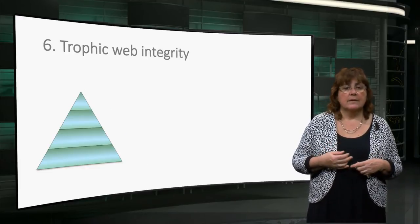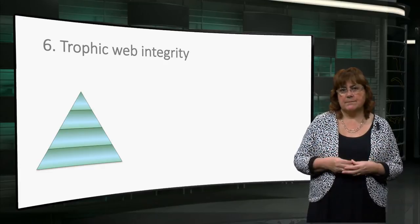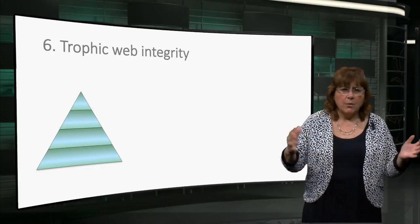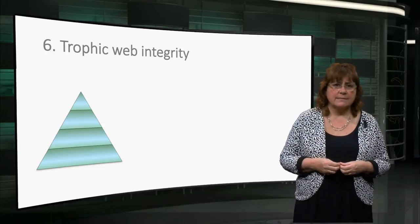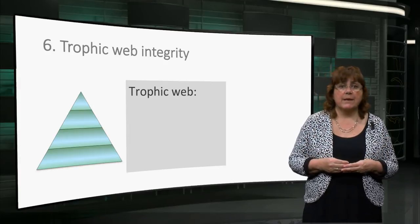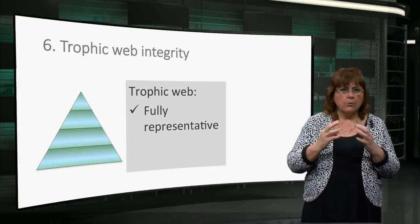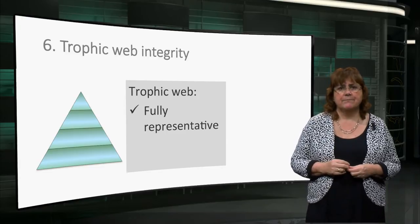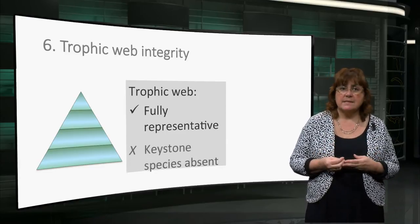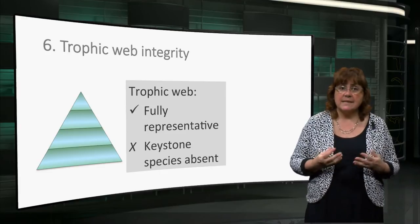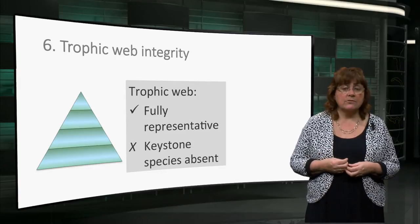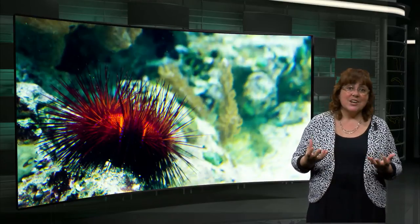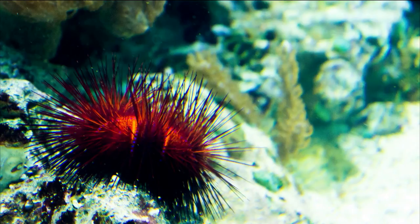Sixth, the principle of trophic web integrity. Ecosystems are complex networks in which matter, energy and living beings interact. A fully representative trophic web has all the levels and all the species interacting in a healthy way. When critical species, also known as keystone species, are missing, the integrity of the trophic web is harmed and the ecosystem is no longer healthy. For example, when urchins are missing from a coral reef environment, algae take over and smother the coral.